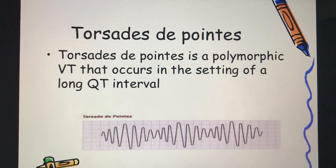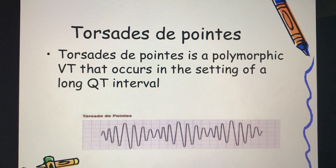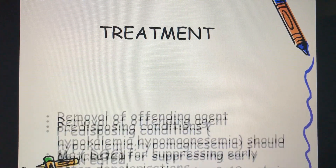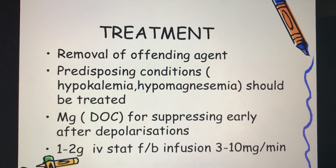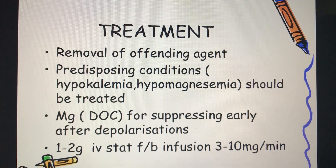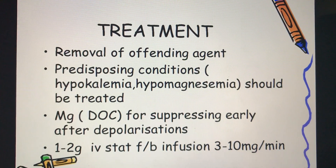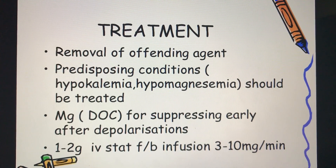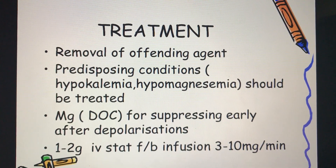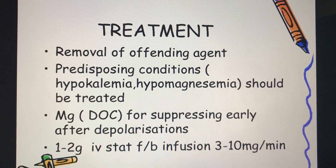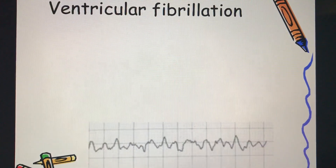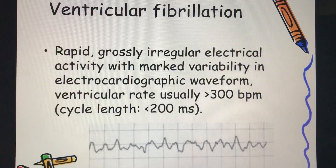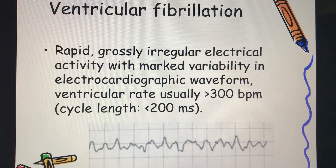Torsades de Pointes is a polymorphic VT that occurs in the setting of a prolonged QT interval. Treatment includes removal of the offending agent, treatment of predisposing conditions, and magnesium, which is the drug of choice for suppressing early after-depolarizations.